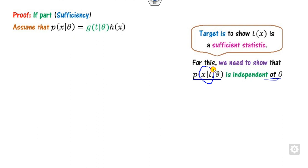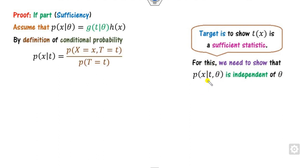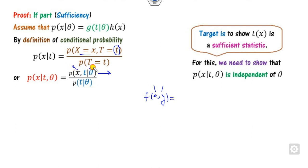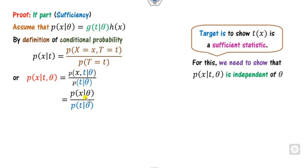Our target is the conditional probability of X given T. We start with the definition of conditional probability: P(X, T | theta). We write the joint density as a function of X and T. Looking at the numerator part — the joint density function f(X, Y) means a function depending on both X and Y — here the numerator is the joint density dependent on both X and T given theta, which equals p(x | theta).